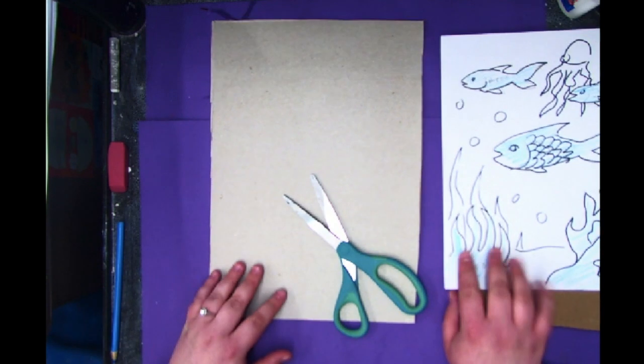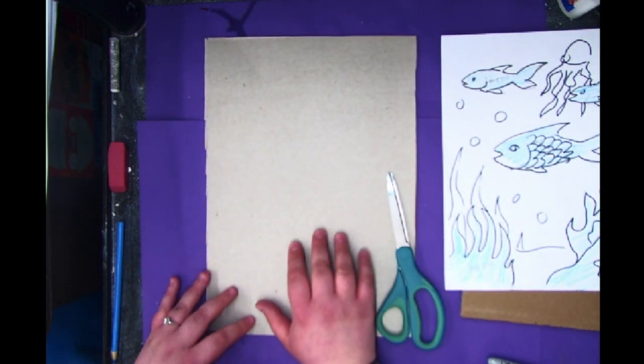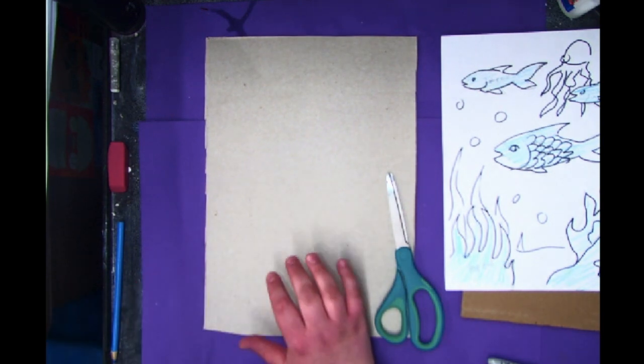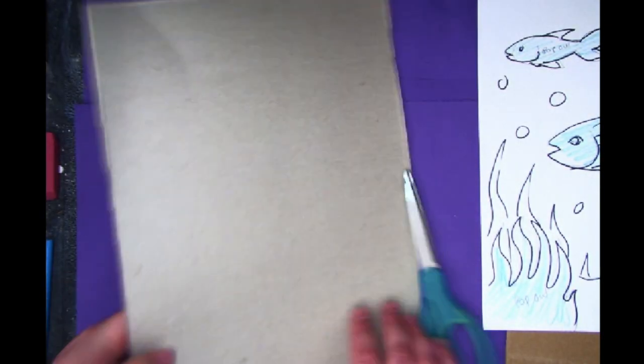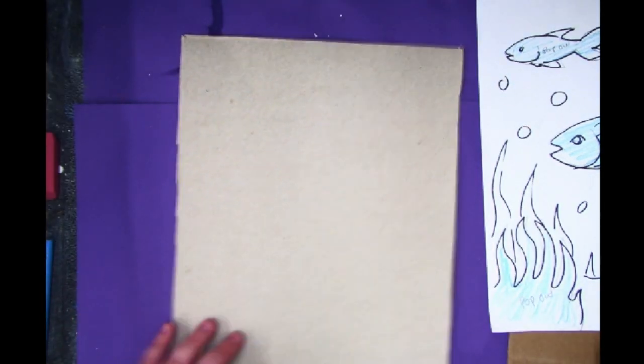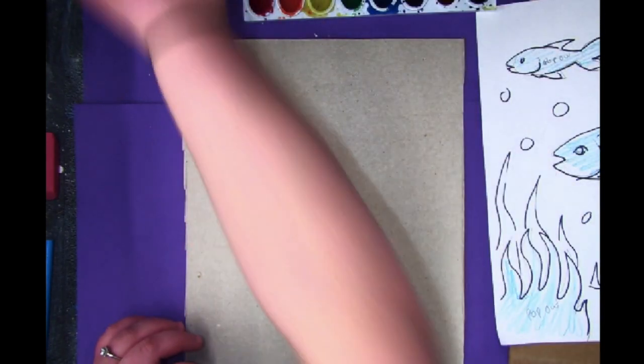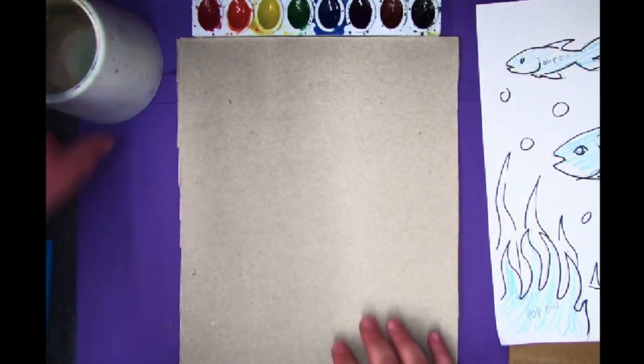Now I have this nice light cardboard that can be the background for your scene. It's up to you if you want to have it vertical or horizontal. You can use any paint you want for this. I'm going to be using watercolor, but if you have tempera or acrylic, that'll work really nice too.